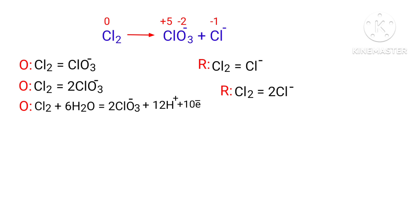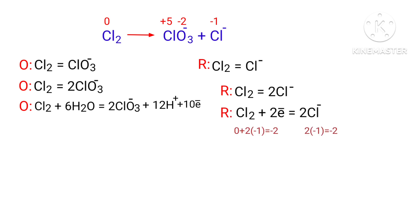Now you can equalize the charges in the reduction half-reaction. Both sides are not equal. To make them equal you should add 2 electrons to the left side to make it equal to minus 2. Now the addition of charges are equaled in the reduction half-reaction.